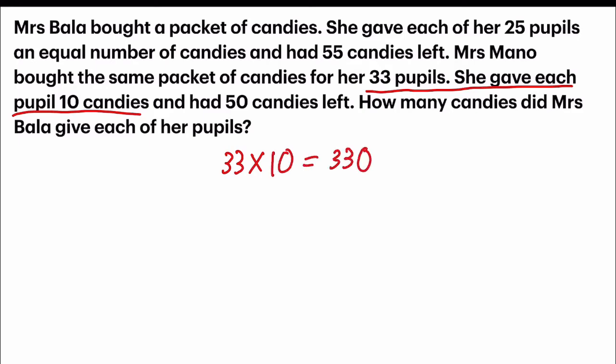She had 50 candies left. So 330 plus 50 candies equals 380 candies. This 380 candies is the total in the packet that she bought.